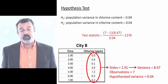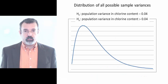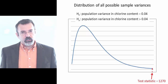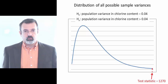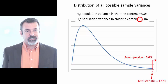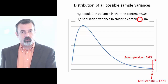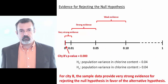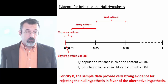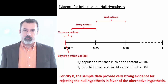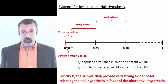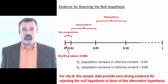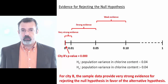For city B, this gives us a test statistic of 1,270. We look at a chi-square distribution and find the area to the right of 1,270, which is virtually zero. We therefore have very strong evidence to reject the null hypothesis in city B. We reject the null that the population variance is 0.04 and conclude that the population variance of chlorine is greater than 0.04. Therefore, the water in city B is unsafe.